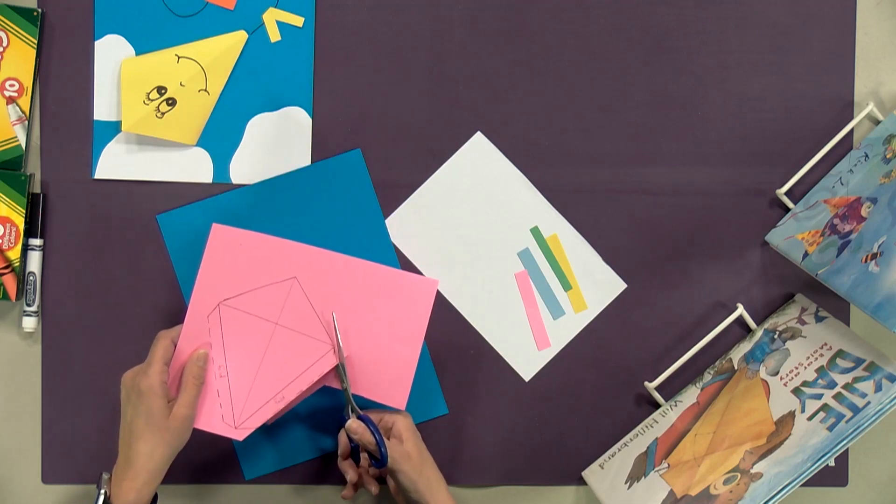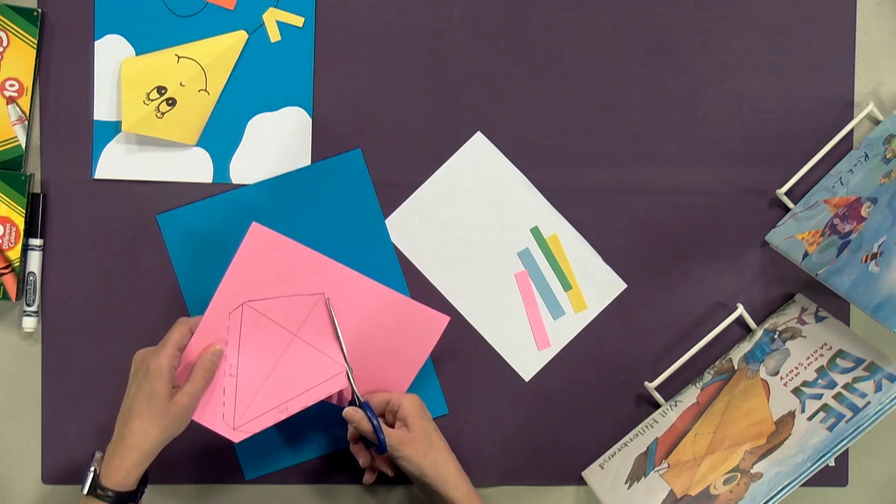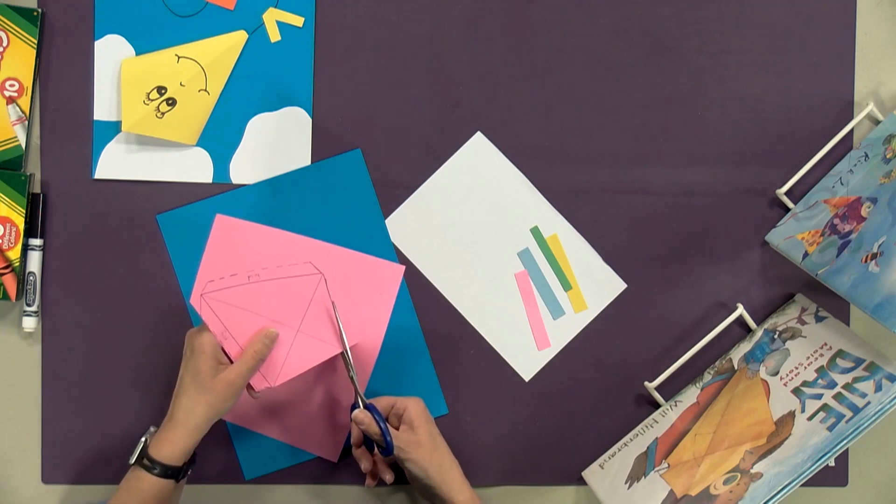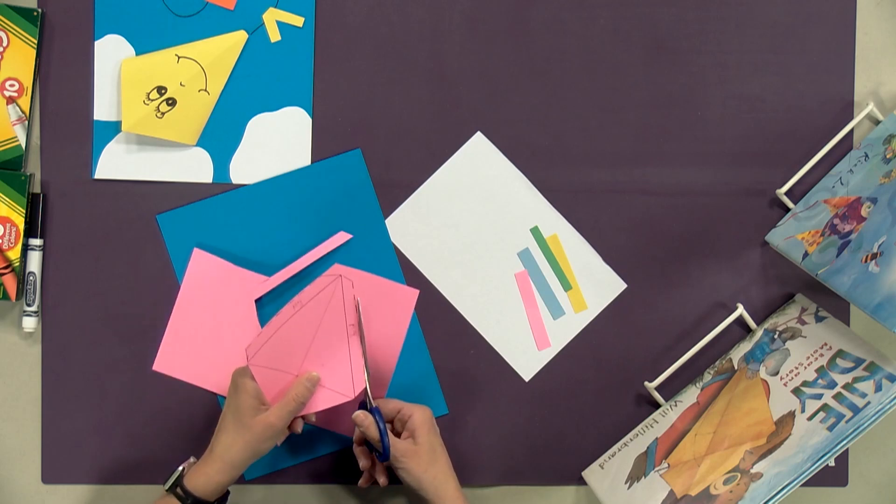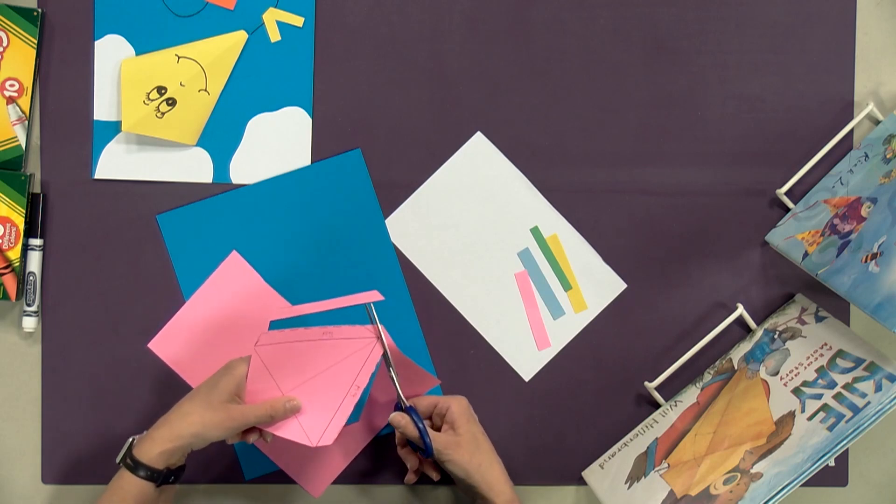We're going to cut on the outside edge here and then we're going to cut the rest right there on the solid line. Solid line means cut, boys and girls, and dotted line means fold.